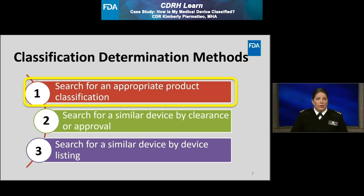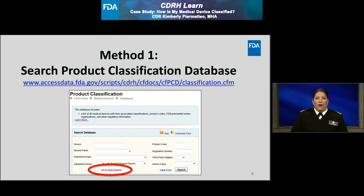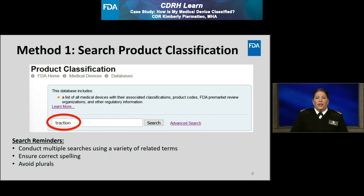First, we will look at method one. To search for an applicable product classification, I will be searching the FDA's public product classification database. A screenshot of the product classification database is provided on this slide. You may search the various fields provided. However, I recommend you go to the quick search feature, which is circled in red on this slide. From the quick search, you can search using a keyword. For this example, I'm going to search using the keyword traction. I could conduct multiple searches using other words, but I feel this one most appropriately describes the example device. When searching the product classification database, remember to conduct multiple searches using a variety of key terms so that you ensure you capture as many potentially related product classifications, which you can then narrow down.